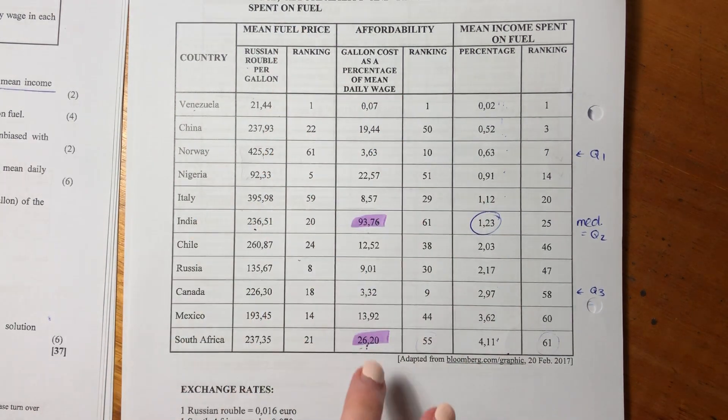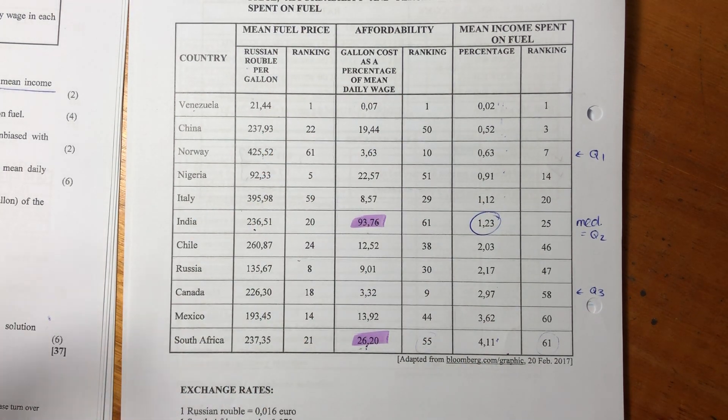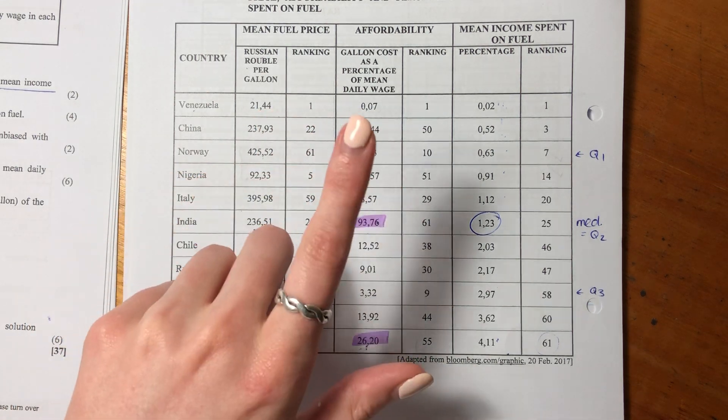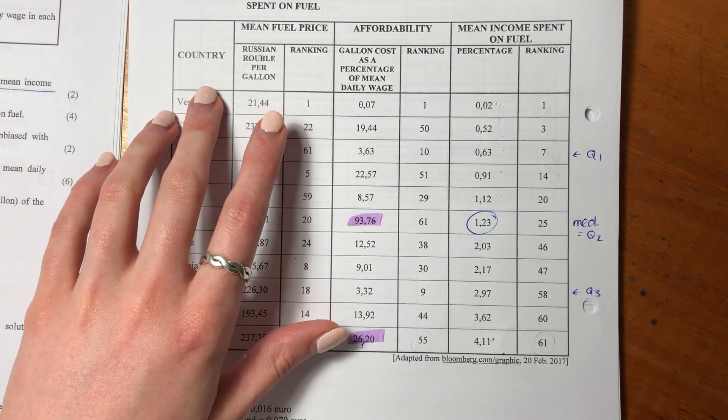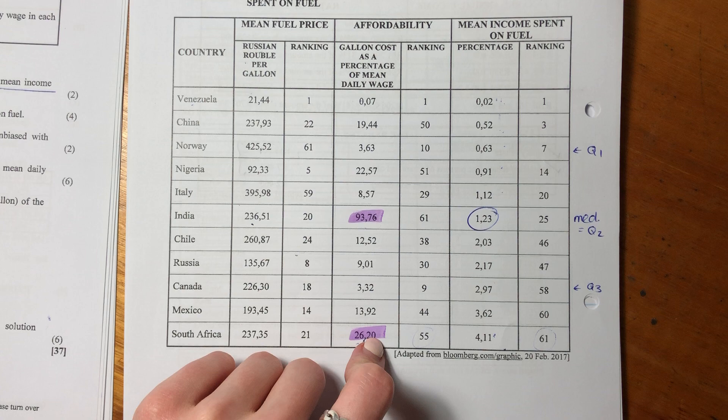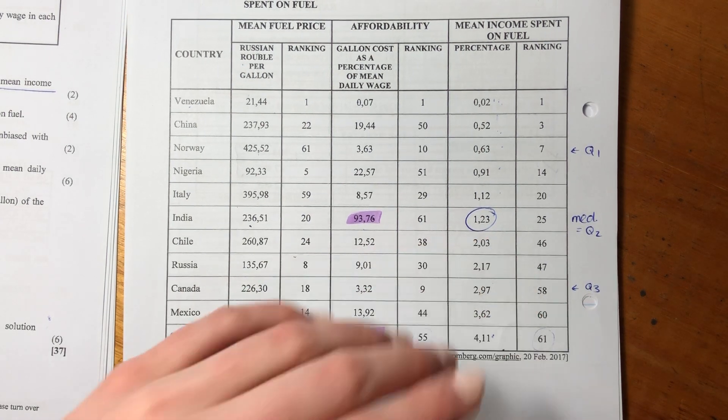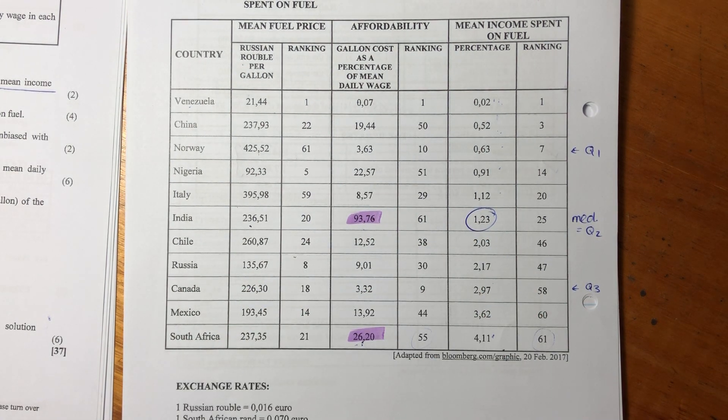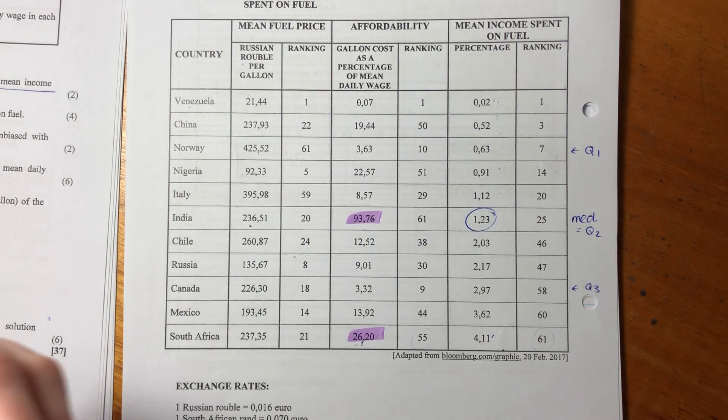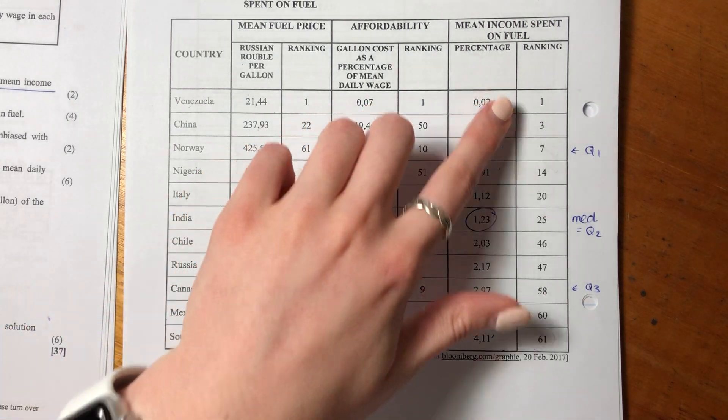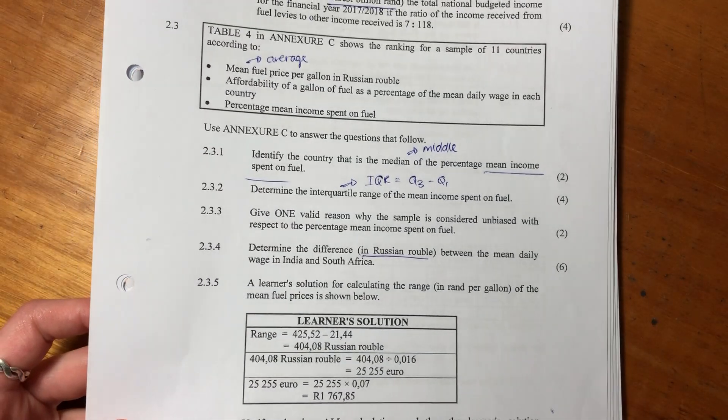In this second grouping, we have gallon cost as a percentage of the mean daily wage. So it basically says that one gallon only costs 0.07% of the mean daily wage in Venezuela. This last column is the mean income spent on fuel, saying what percentage of income is spent on fuel in each of these countries. Again, the ranking is done on affordability.